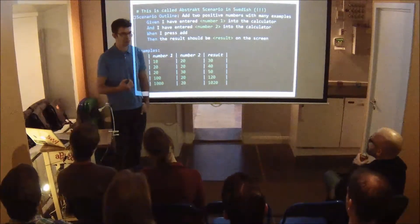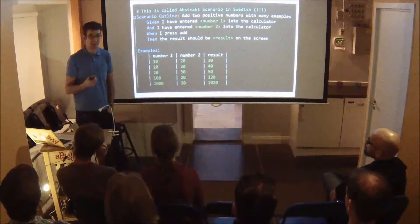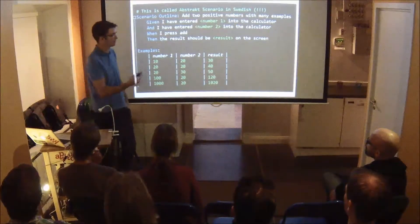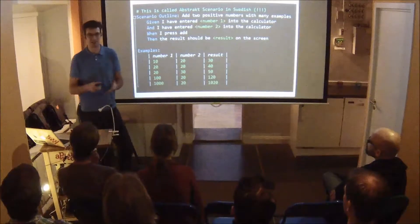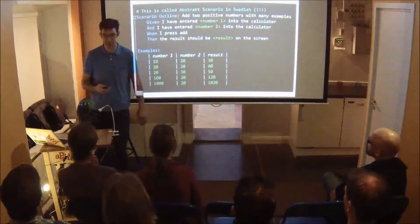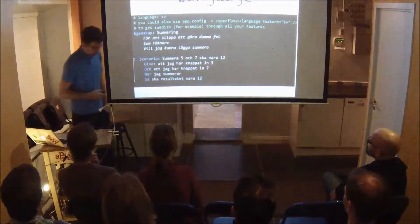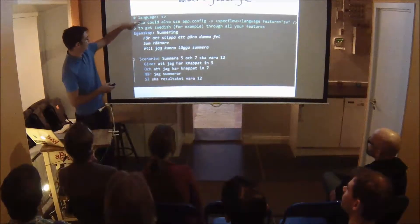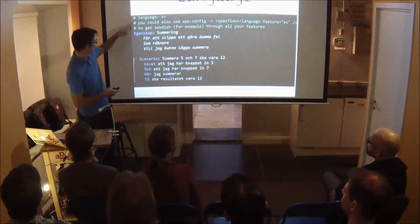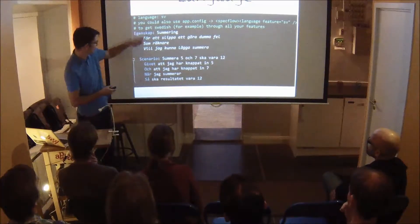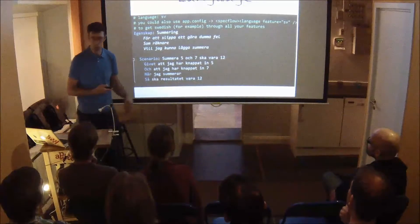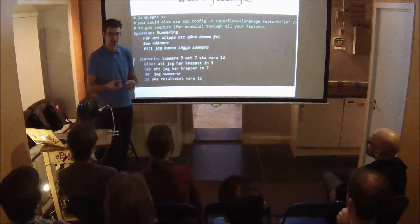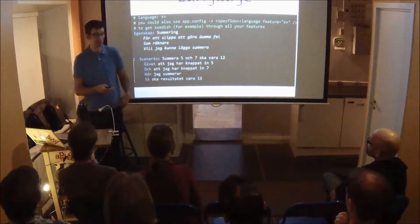Don't be too liberal with Scenario Outlines — they can be very hard to read if the table is extremely long. My suggestion is no more than six or seven columns and six or seven rows. Business people, especially those familiar with Excel, pick this up really easily — they often say 'this is just like an equation.' You can also specify the language in your feature file with a comment or in your config file.